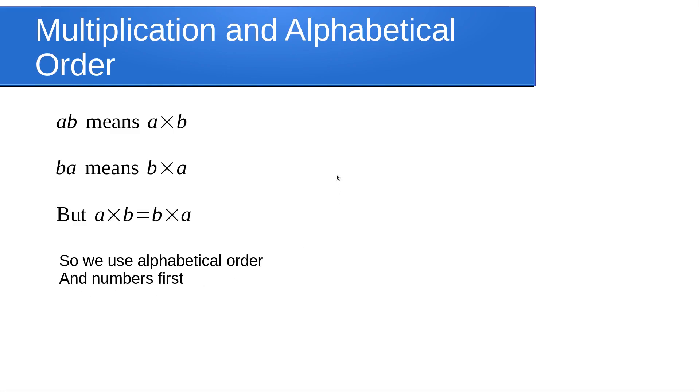Numbers go first. So let's look at some examples. ACB becomes ABC, alphabetical order. F2B becomes 2BF. Numbers always go first, then it's alphabetical order.